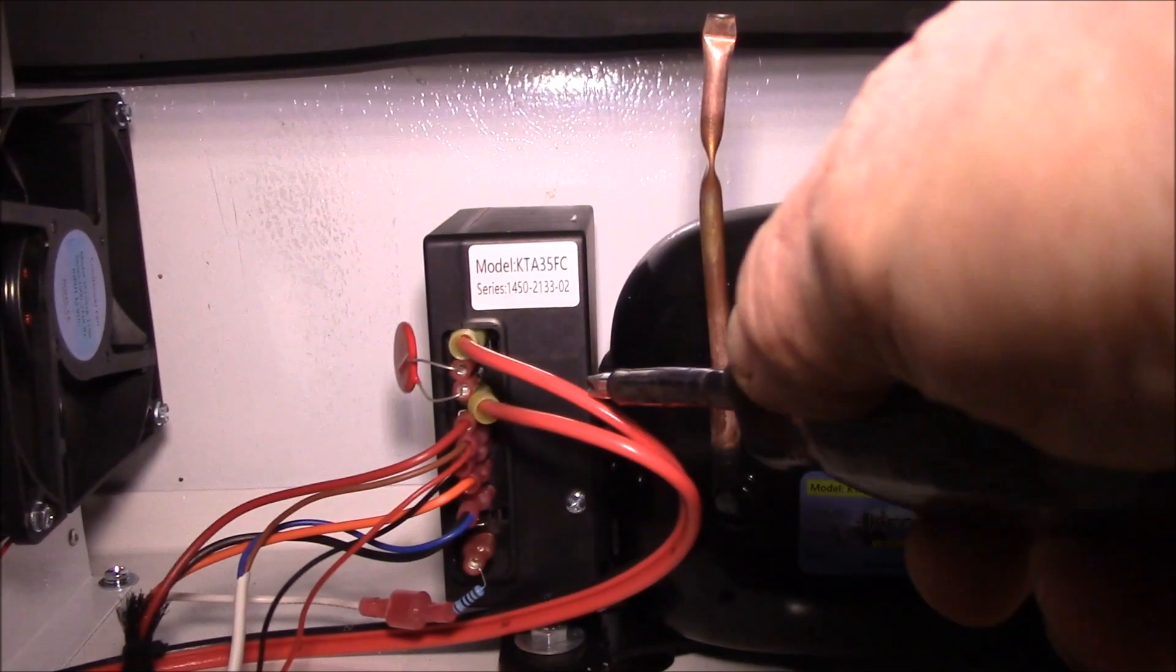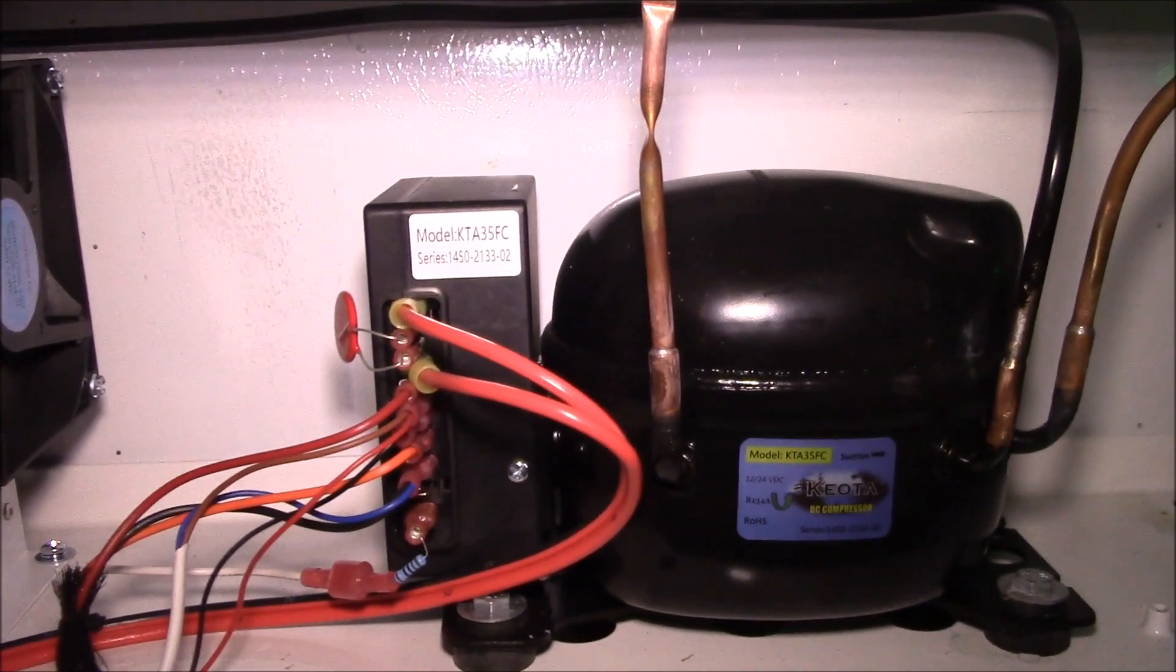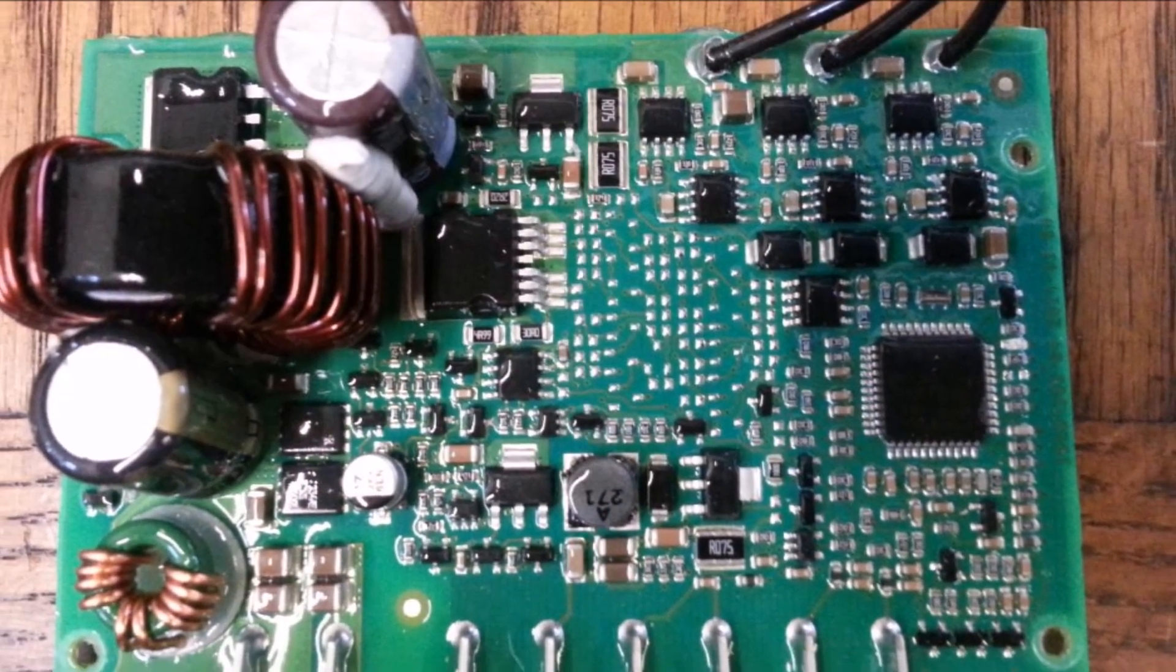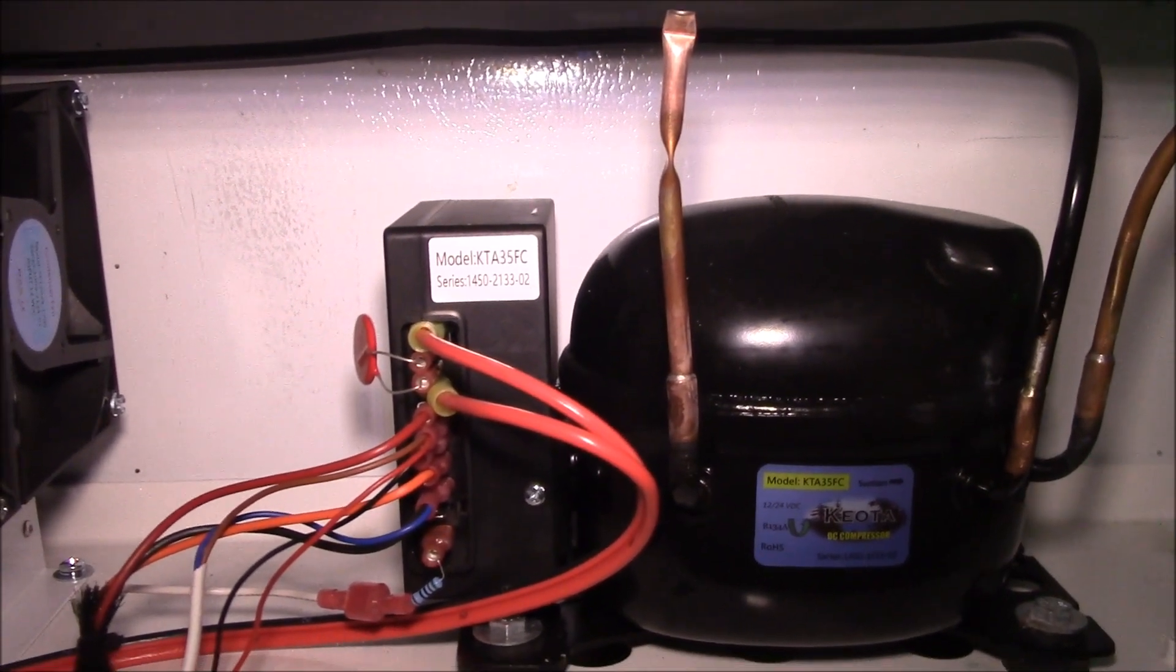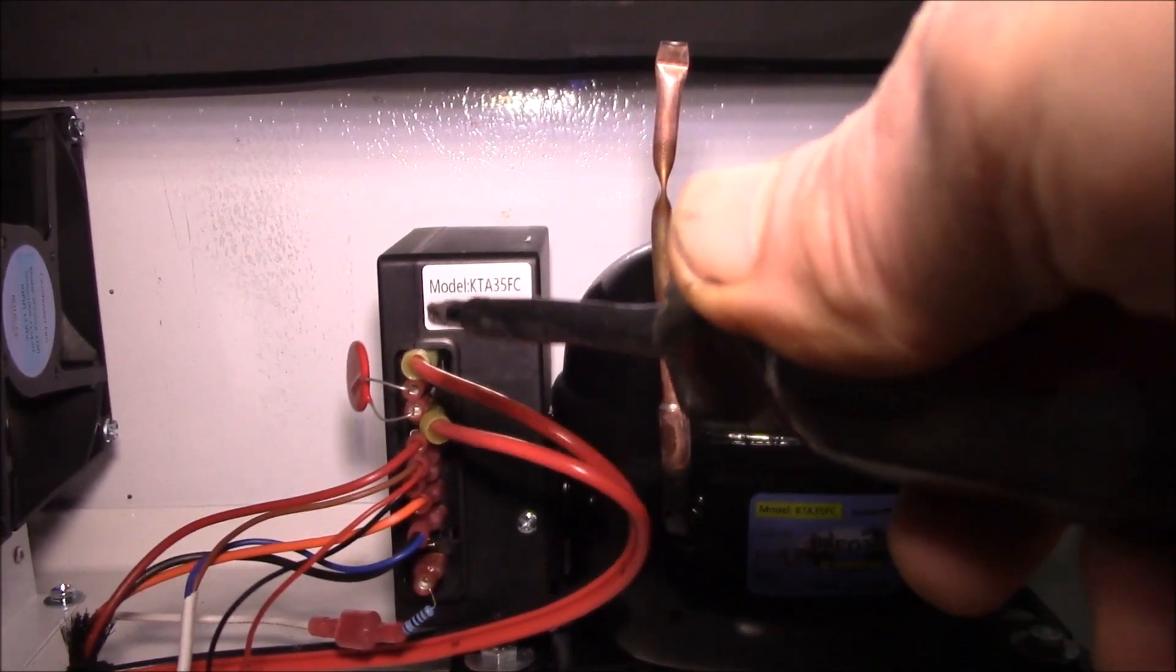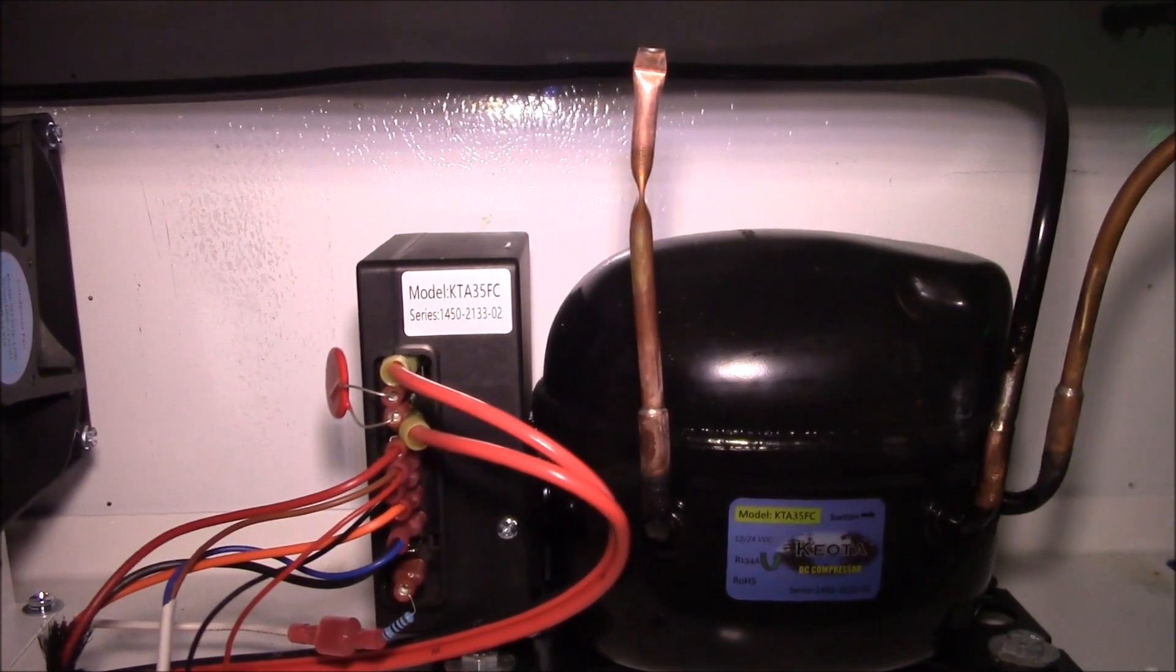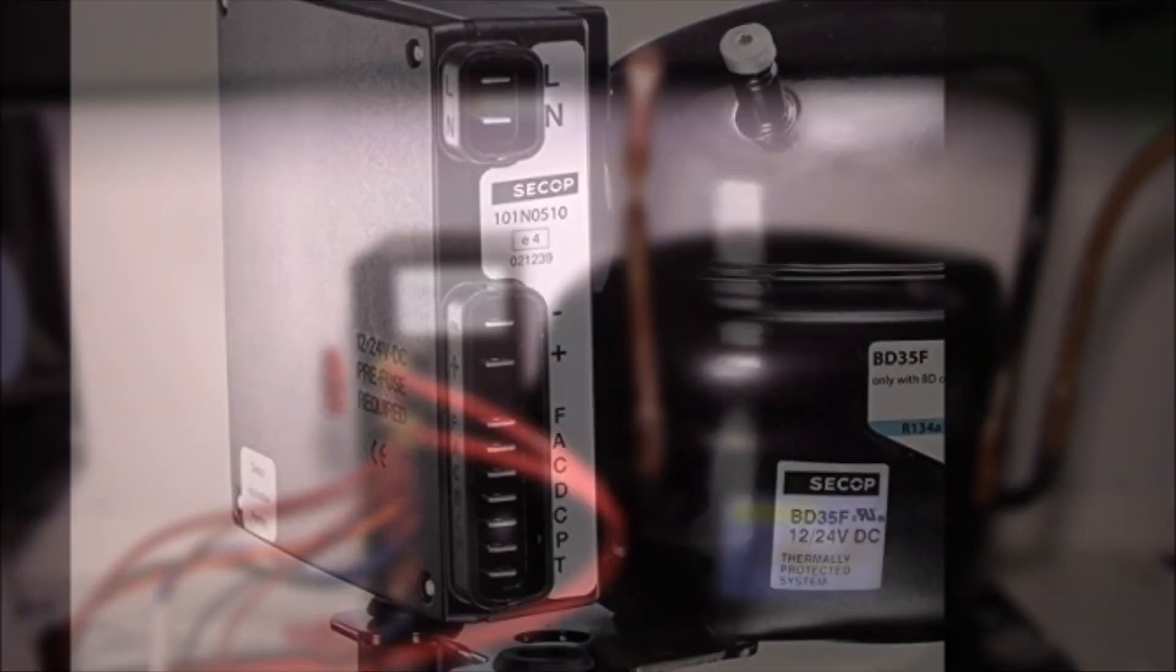This controller here operates that compressor and it's actually a variable speed compressor. This particular controller can run off of 12 or 24 volt DC. They also have a version that has a line and neutral connection on the top for 100 to 240 volt AC input.